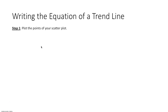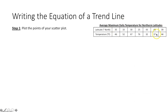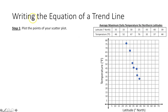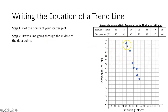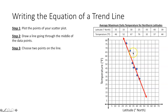Now let's talk about writing the equation of a trend line. First, plot the points from your table — here's what our graph looks like. To write the equation of a trend line, draw a line through the middle of your data points using your best judgment. To create the equation of this line, you need a point and a slope. Finding a point is easy, but for slope you need two points on the line — not necessarily points from the scatter plot, but two points on your trend line.